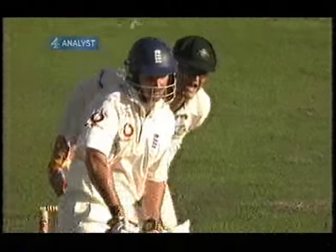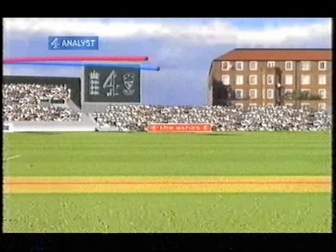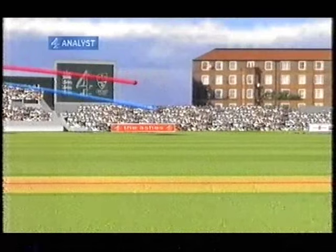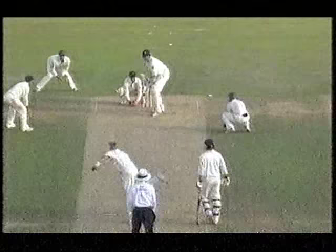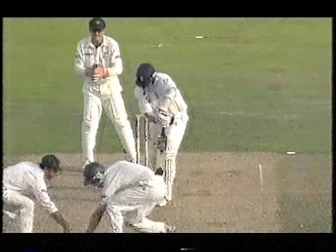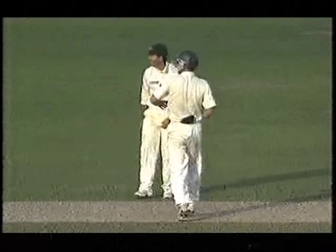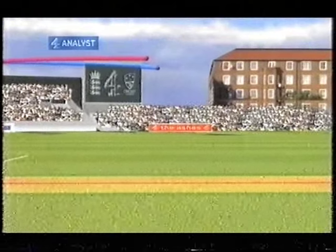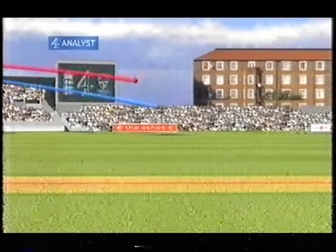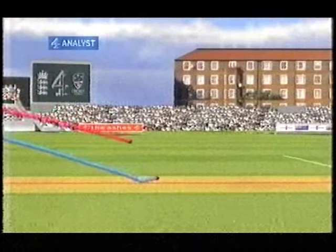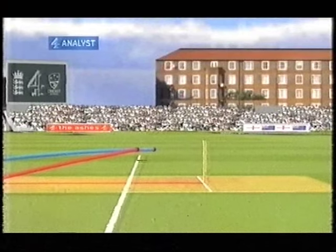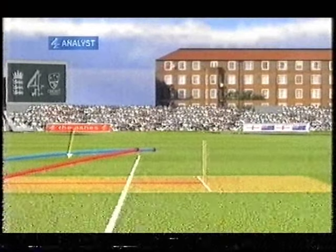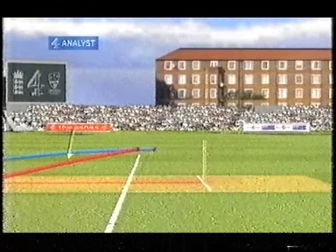That's what got the wicket in the end — just a little bit of extra bounce there, carrying to that silly point field. You can see the bounce: the red ball is the top spinner and it's a little higher. The top spinner is the red ball and you can see it just loops and then dips. Watch the bounce here compared to the blue ball — it's much steeper in this area. The bounce is steeper than the orthodox blue leg break, and that's what caused the wicket.